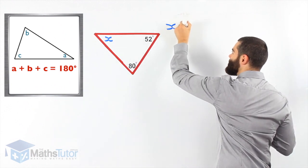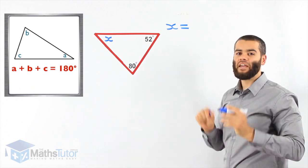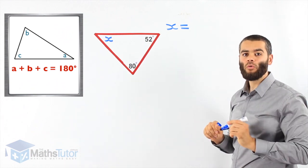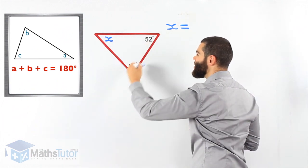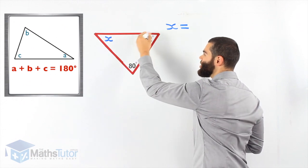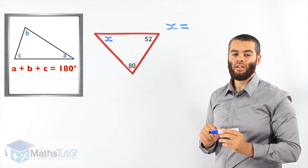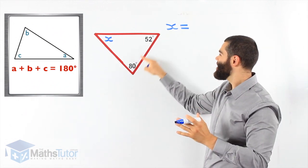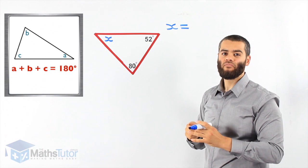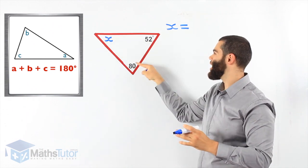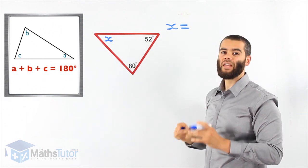X equals. What does X equal? It equals 180 degrees, which is the total, take away the 52, and take away the 80 degrees. 180 is that, and that, and that. All three angles add up to 180 degrees. That is the total.